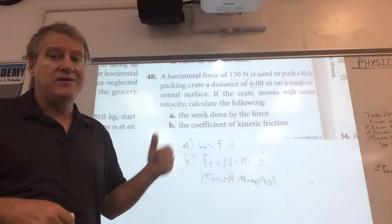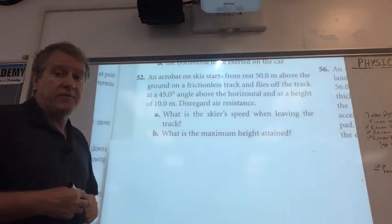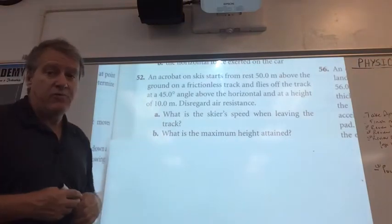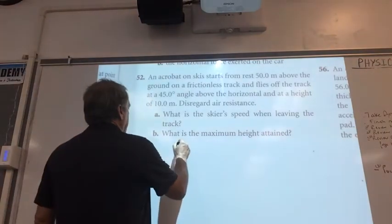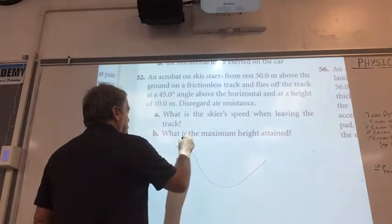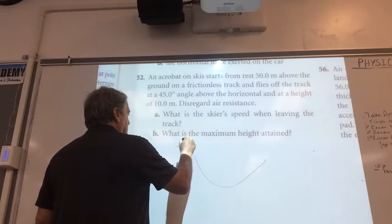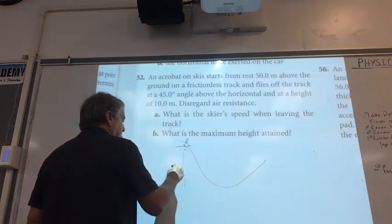Alright, let's look at number 52. First thing I would do is I would draw a picture to represent what we're looking at here, and that is we've got a scenario like this where you've got a skier who's coming off a track like this.